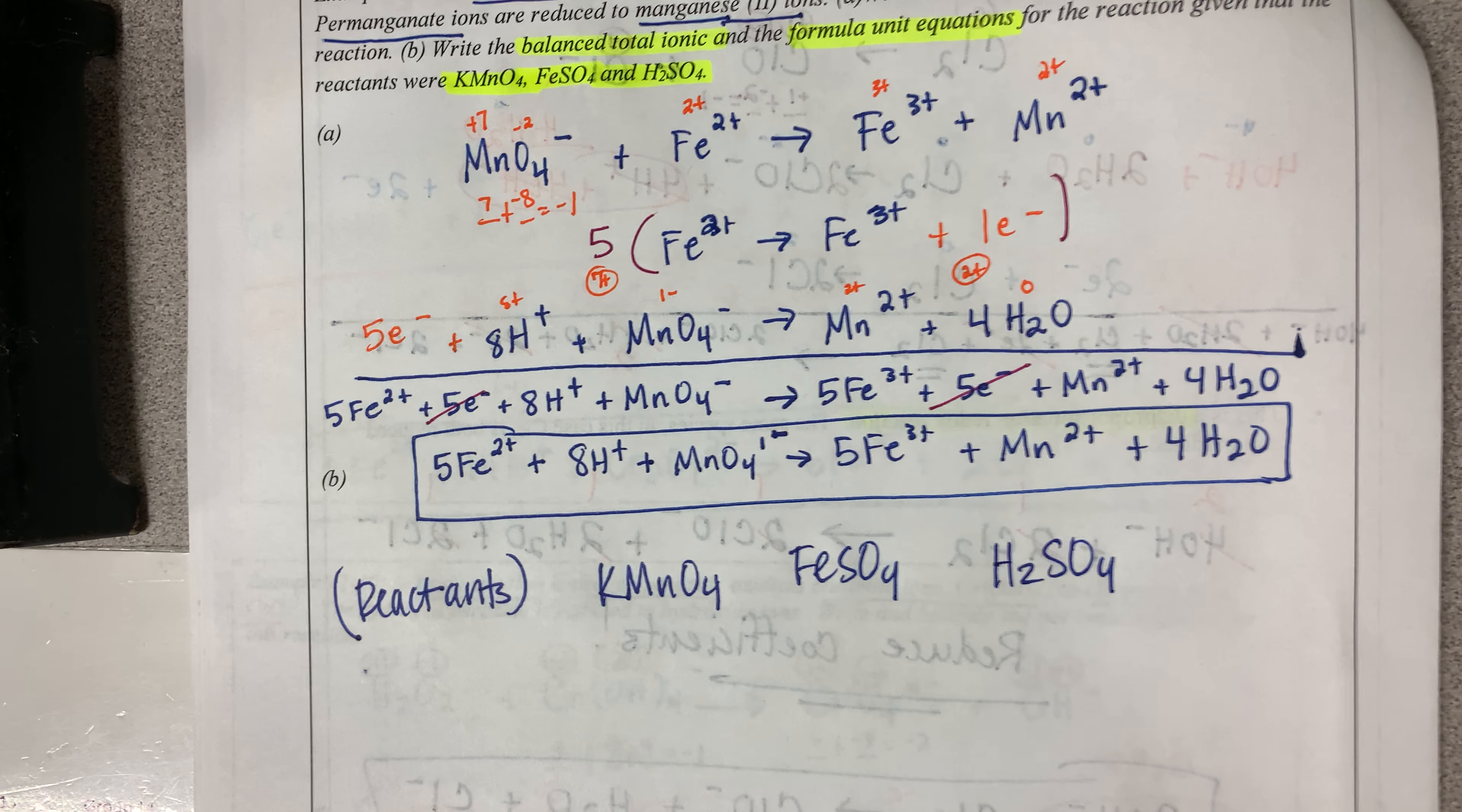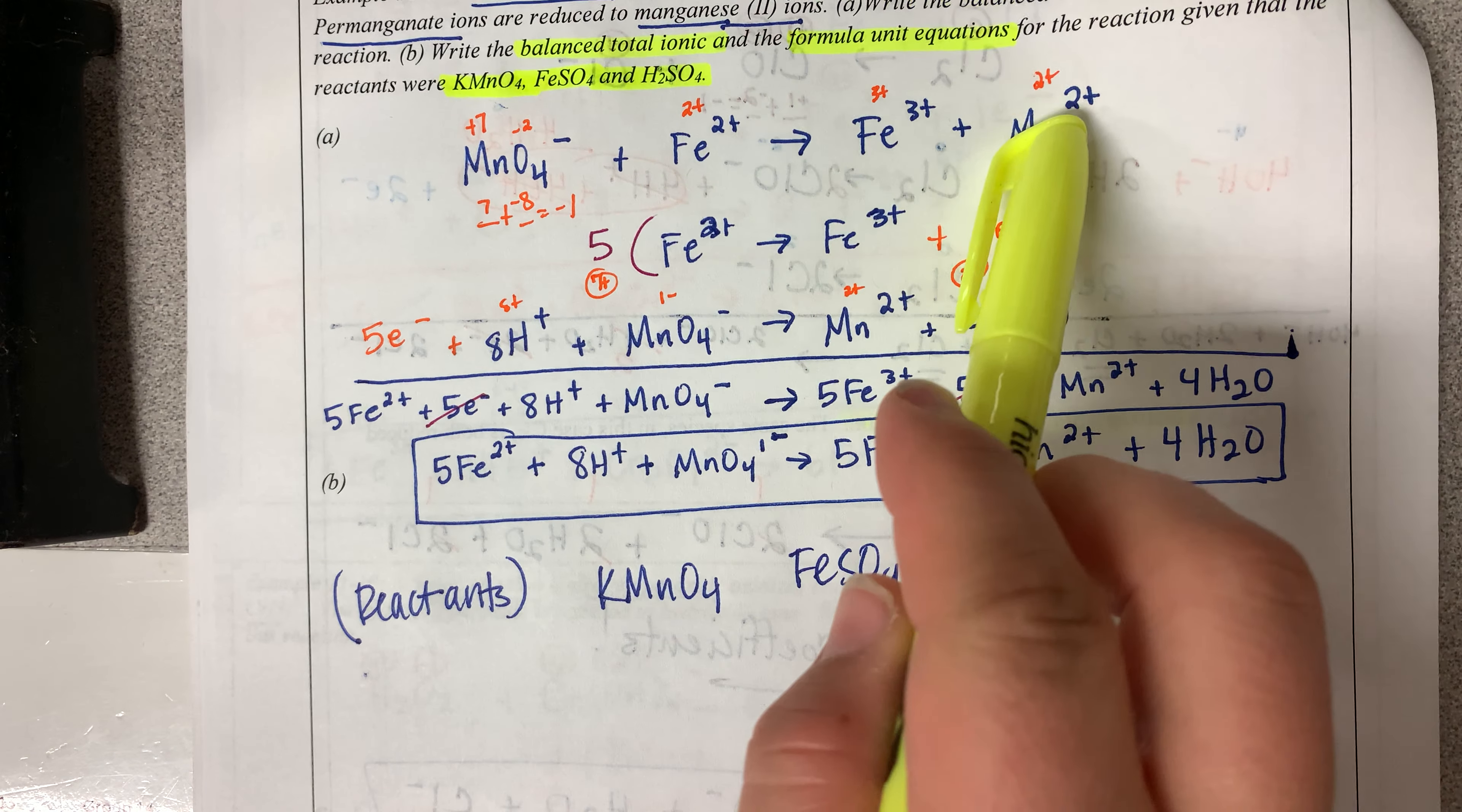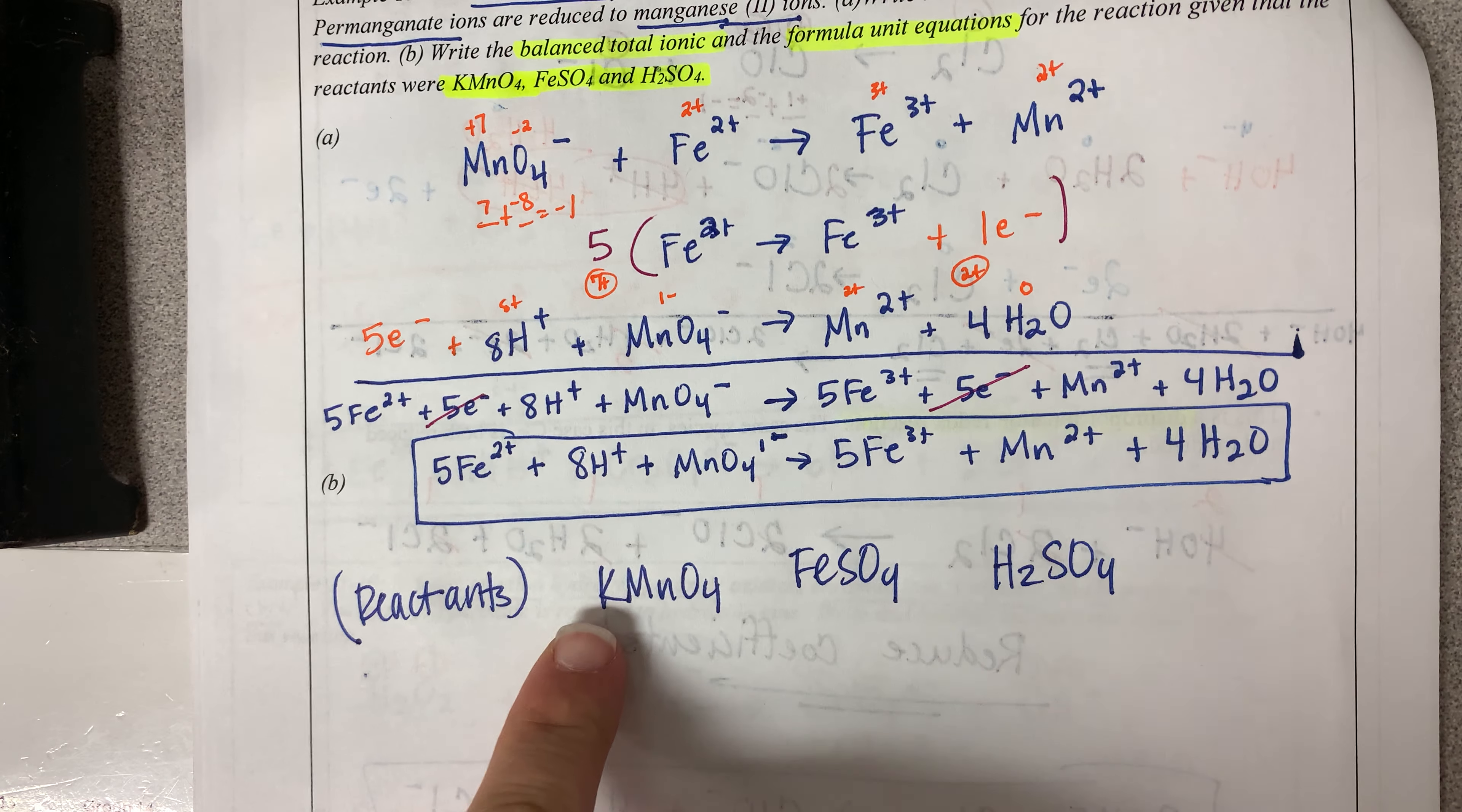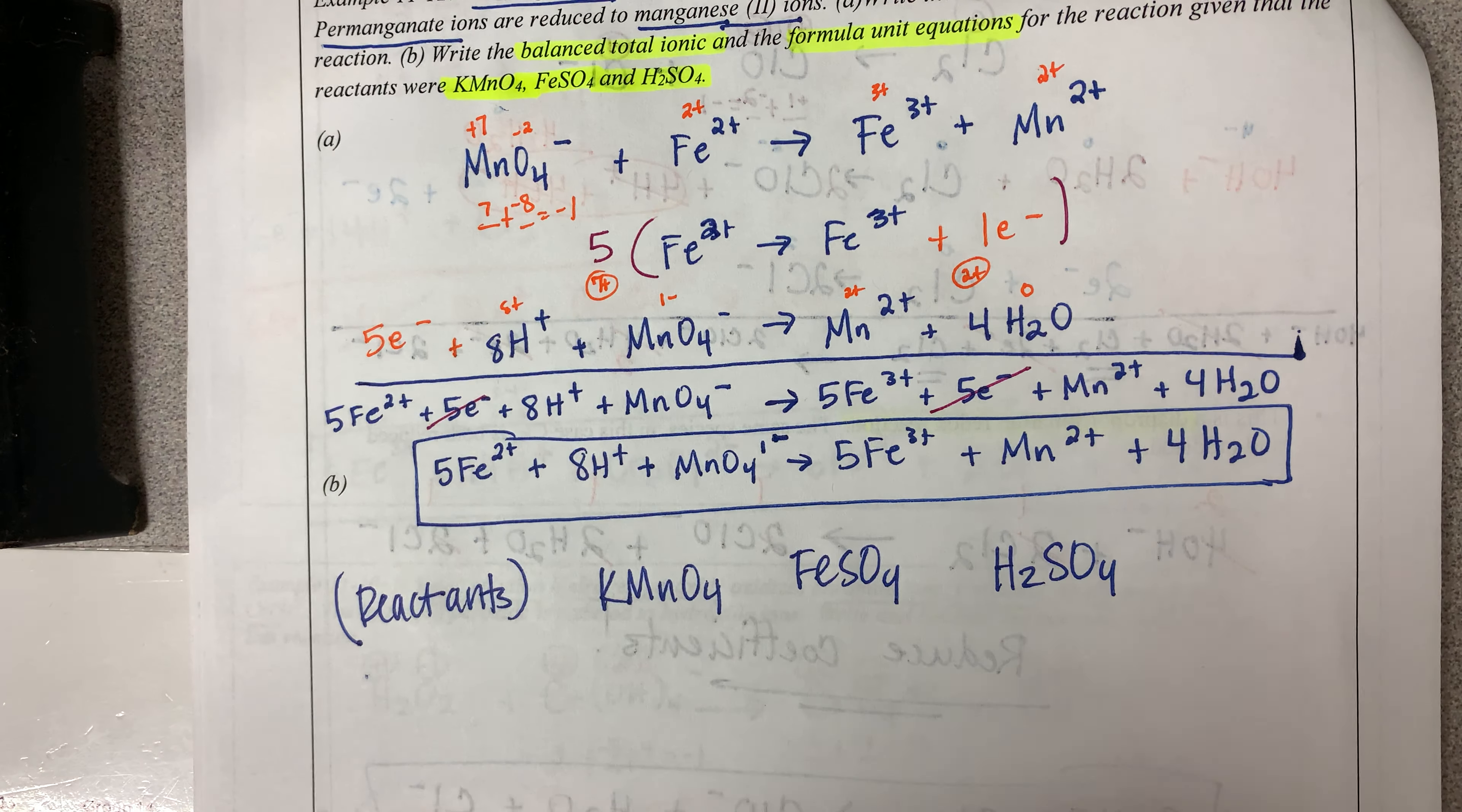Now, before we begin, let's think about what our spectator ions would have been. If you look at the original substances, K, if this was a reactant, K had to have been a spectator. Same thing.